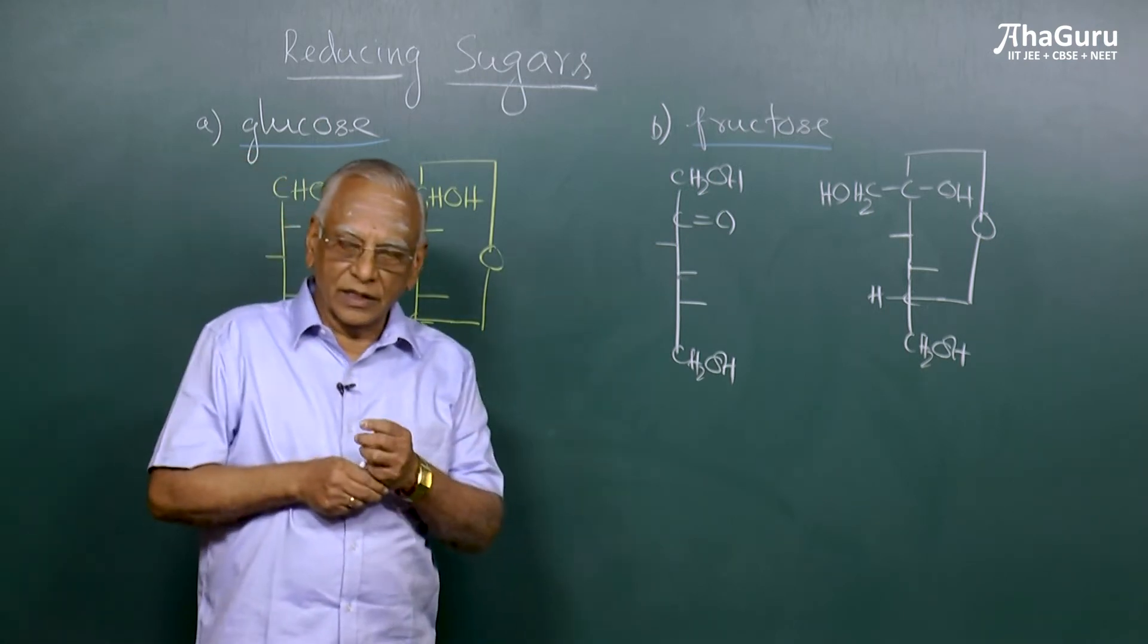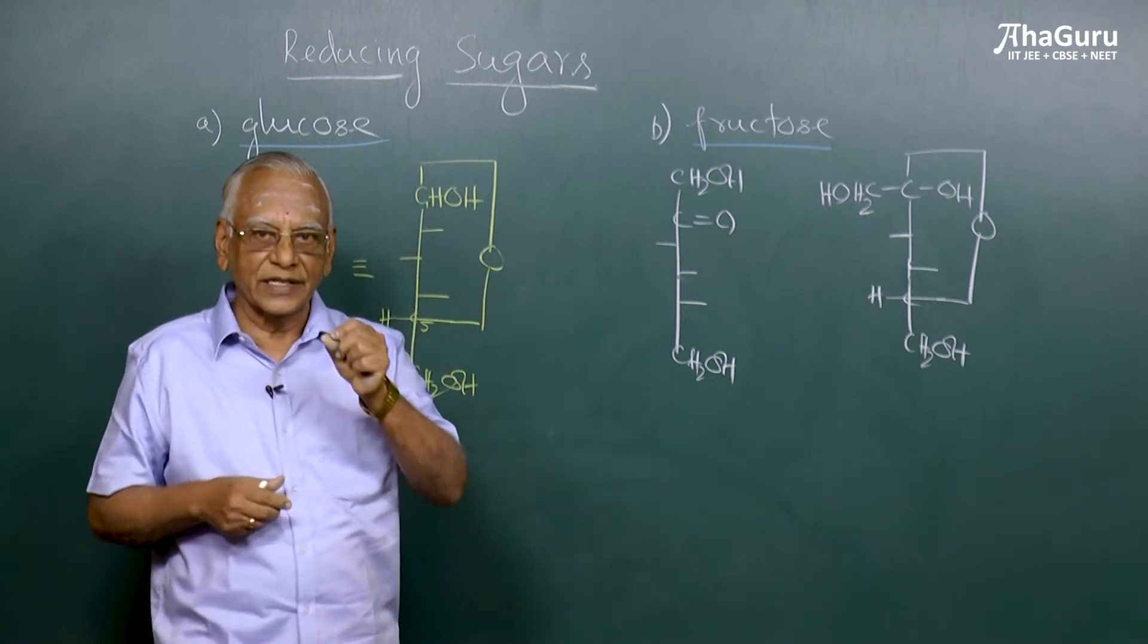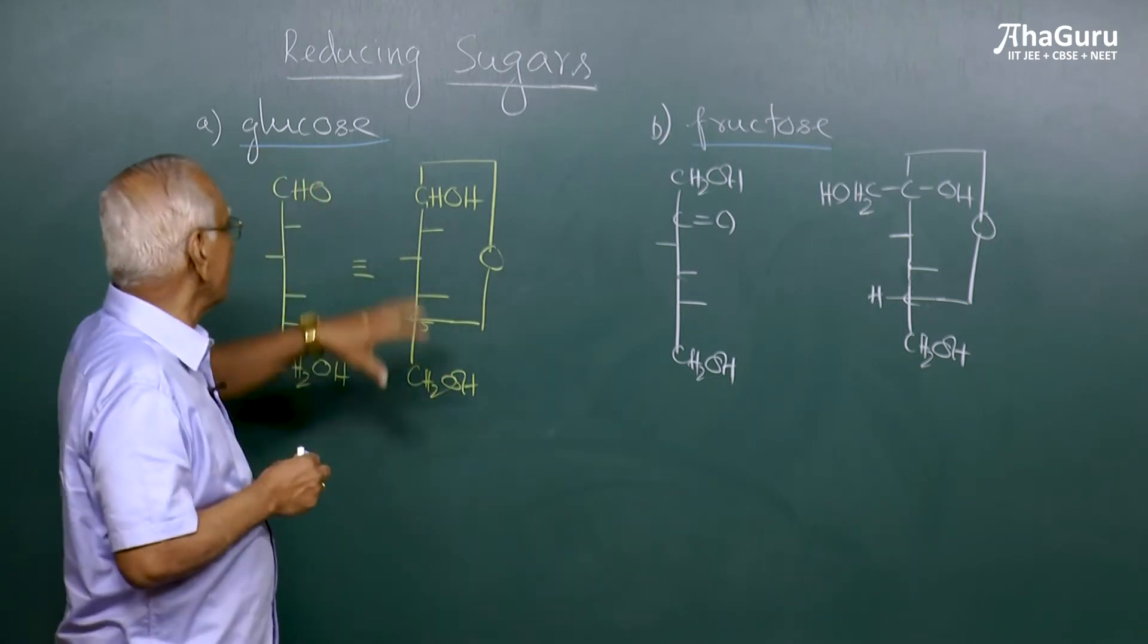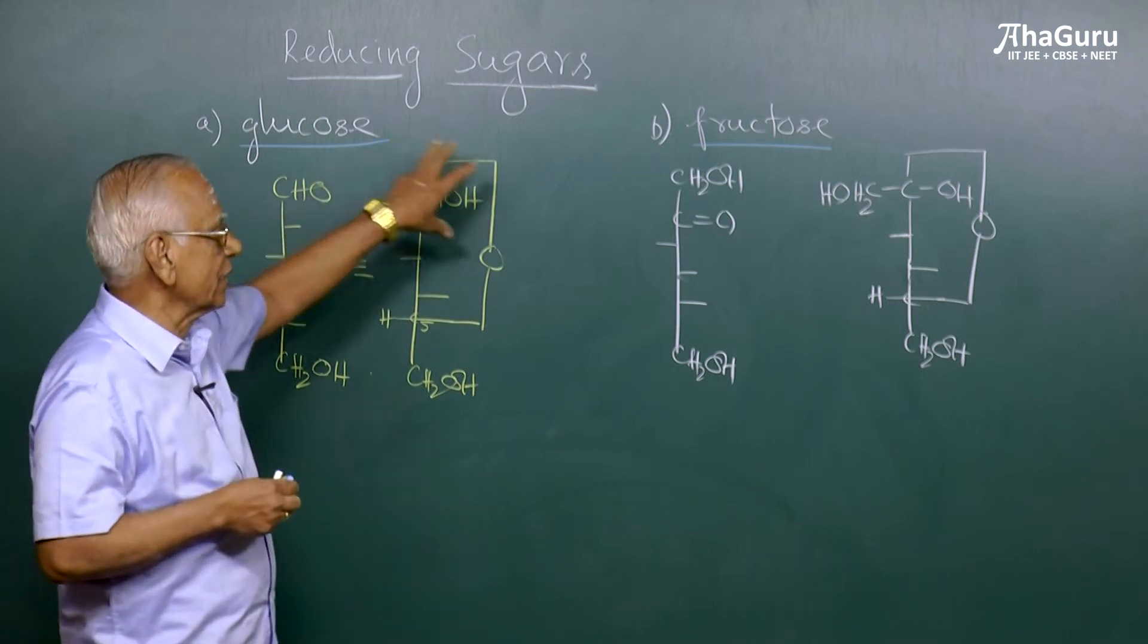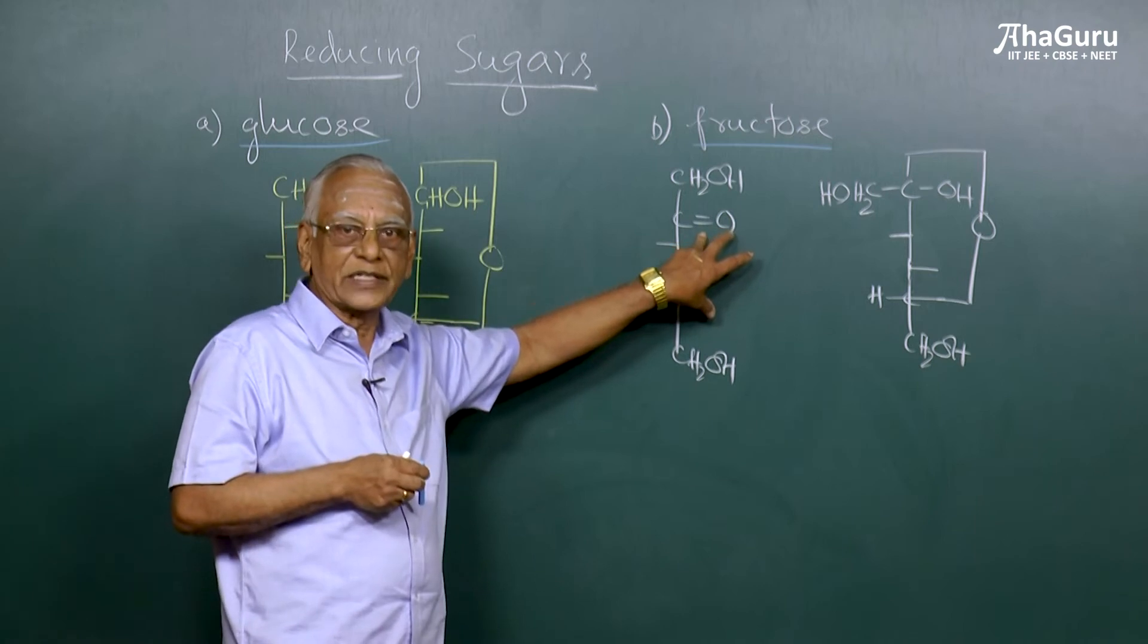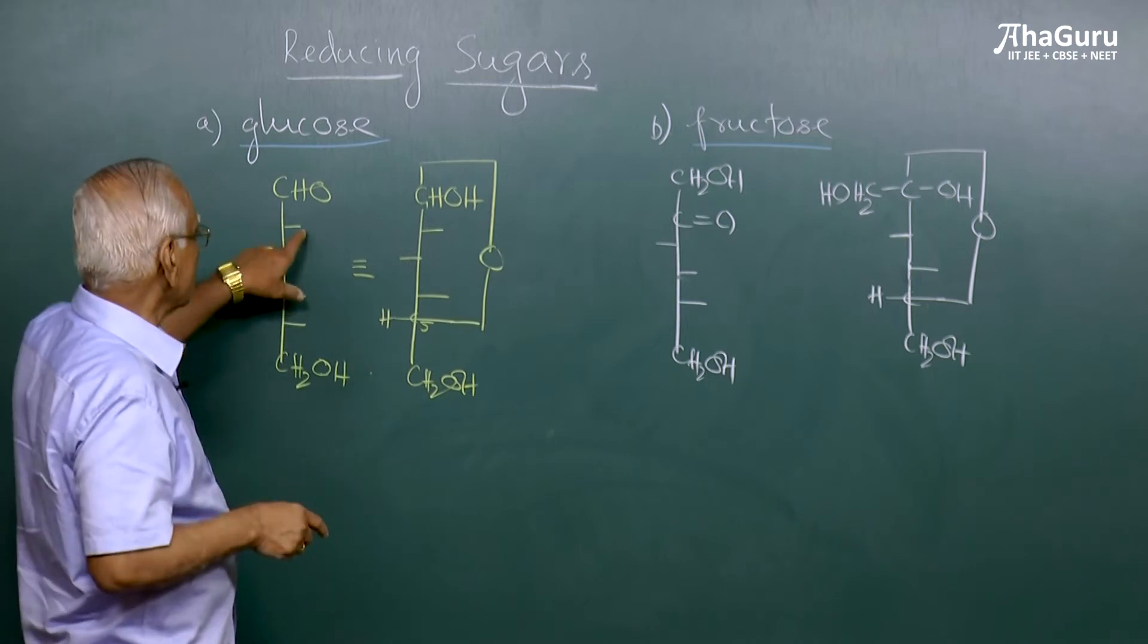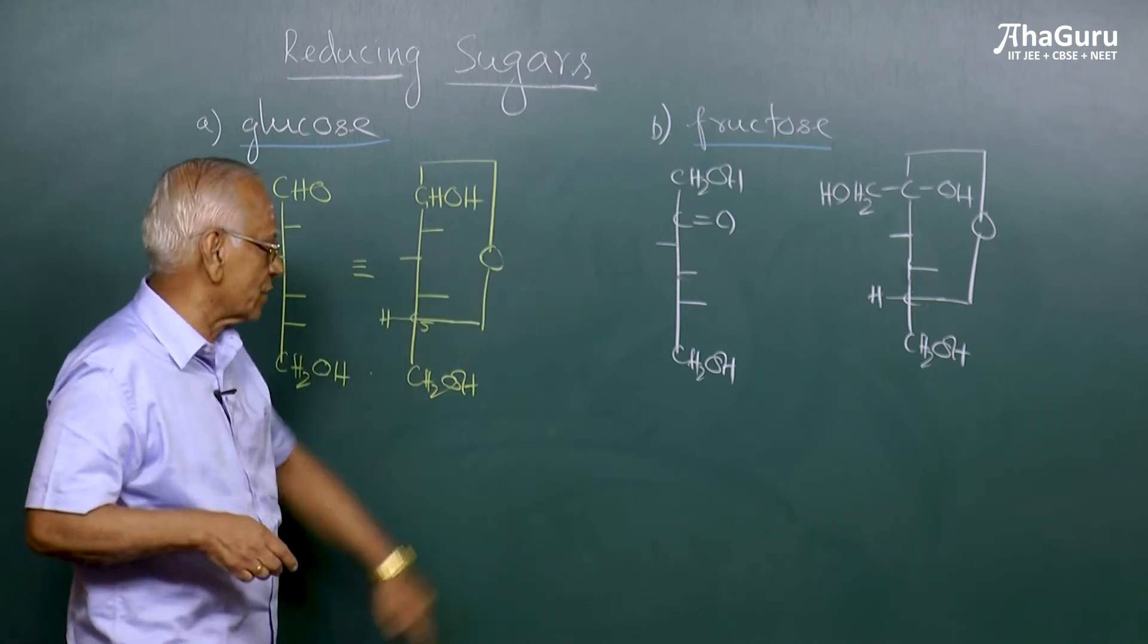But generally aldehydes are identified from ketones by using Tollens reagent. Only aldehydes will form a silver mirror and ketones do not. But how do we account for the formation of silver mirror in the case of fructose, which is a ketose? This is an aldohexose. This is a ketohexose.